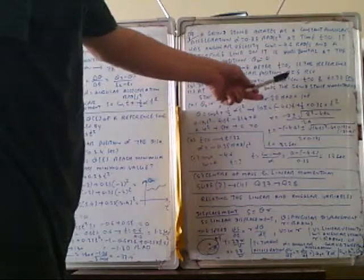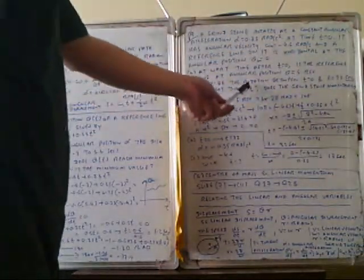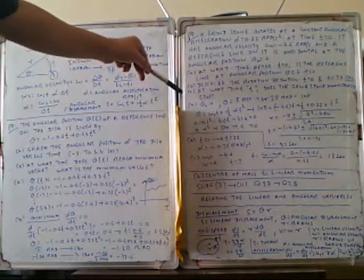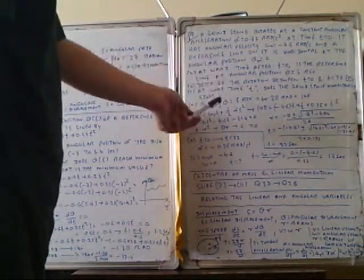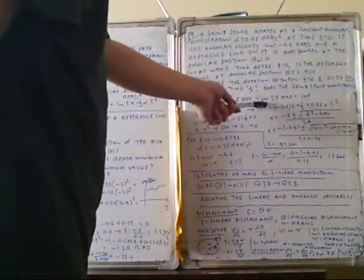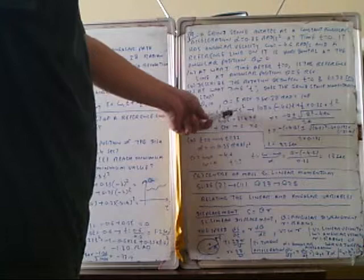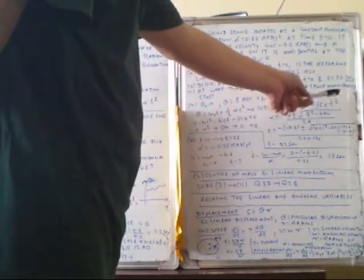Part B: describe the rotation between t equals zero and t equals 32 seconds. Part C: find when the grindstone momentarily stops. For part A, initial displacement theta zero is zero and we need five revolutions. Five revolutions equals five times 2π radians, which is 10π. Using theta equals omega zero times t plus one half times alpha times t squared, we substitute: 10π equals minus 4.6 times t plus one half times 0.35 times t squared.